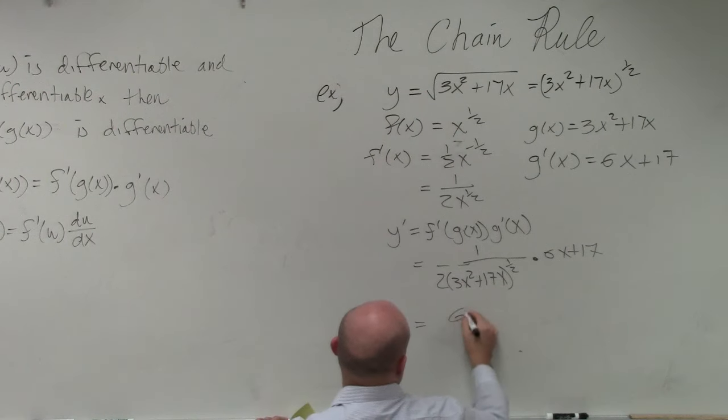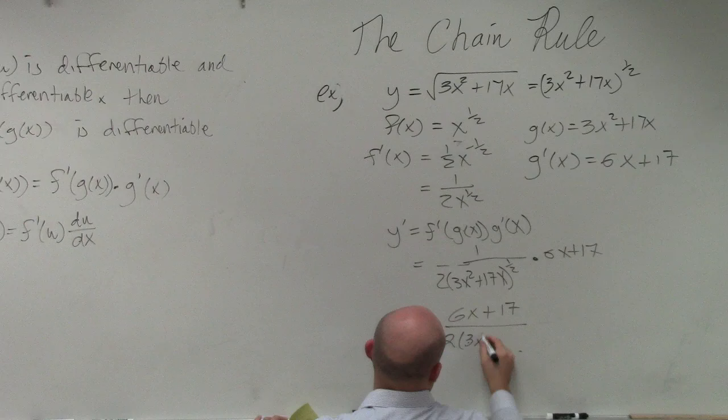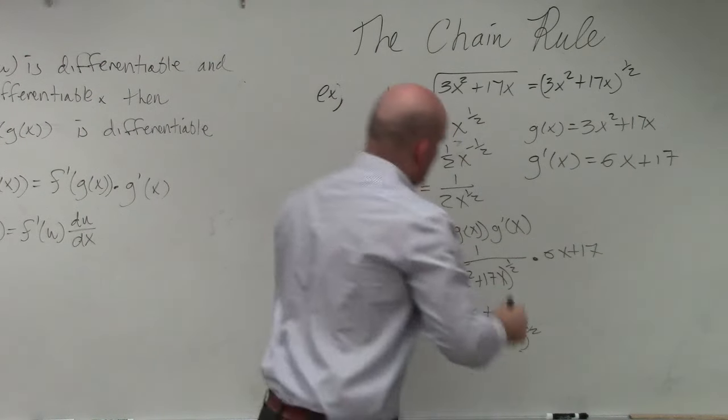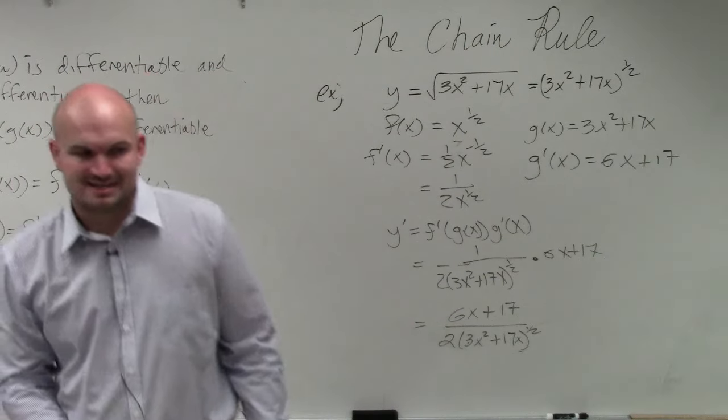So my final answer is 6x plus 17 over 2 times 3x squared plus 17x raised to the 1 half power. And we'll just leave it as that.